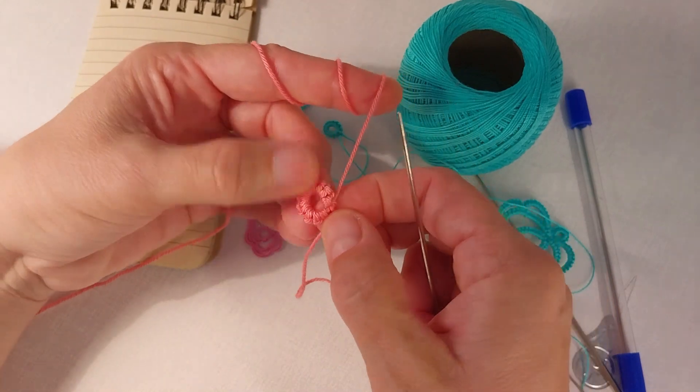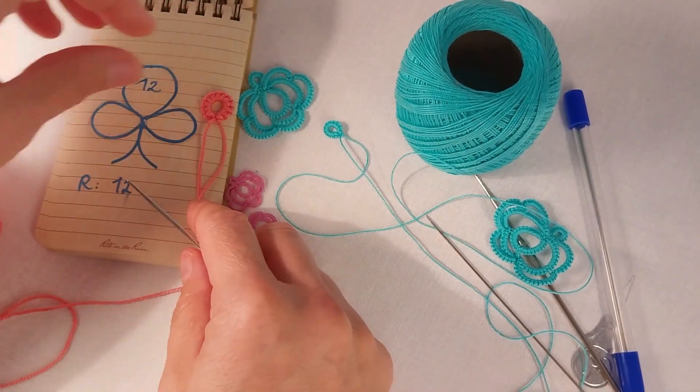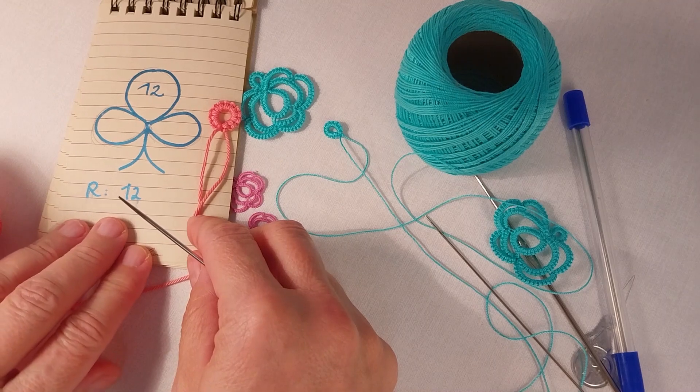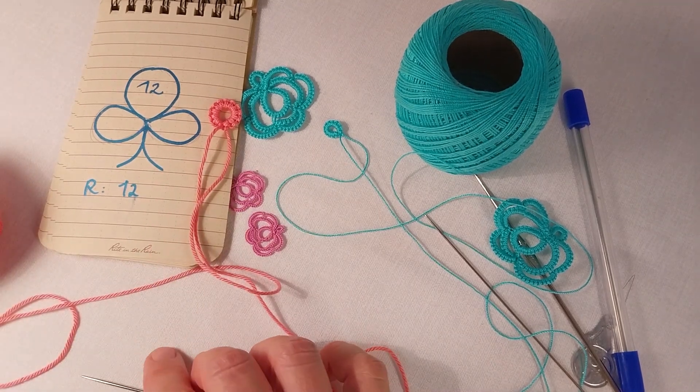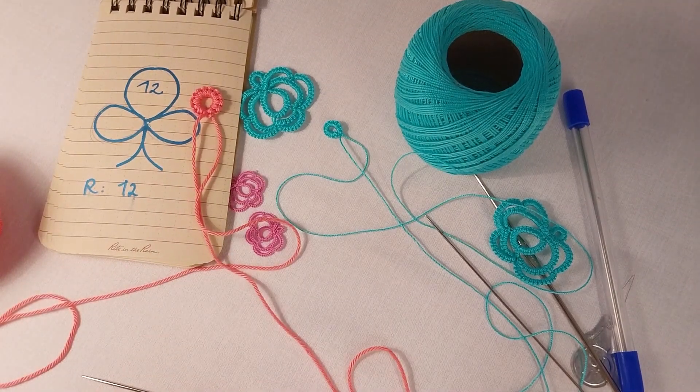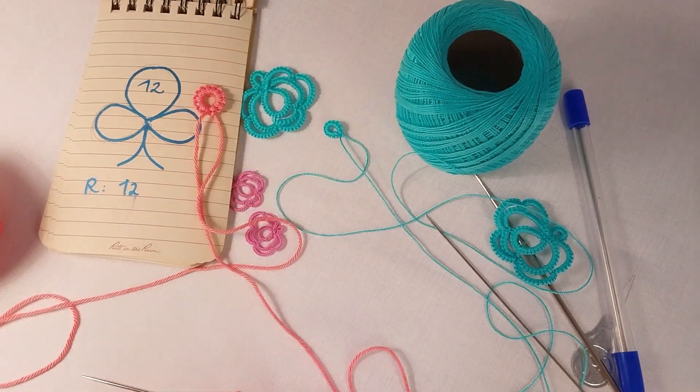So we made a ring from 12 stitches, according to the pattern. I hope you like my video. Please sign up and give me a thumbs up if you like this.